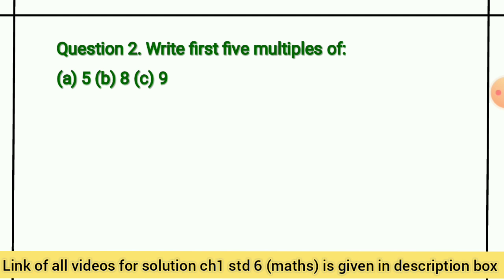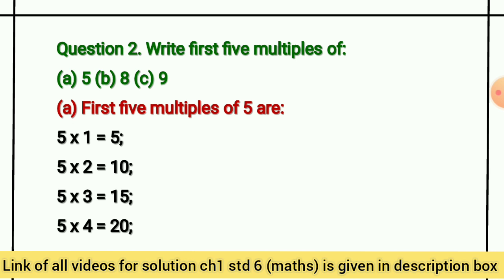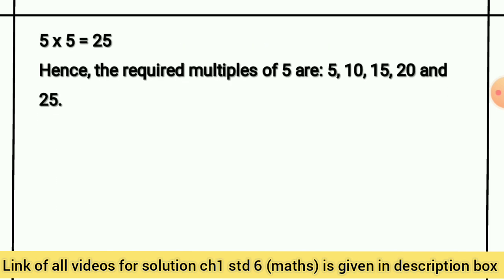Question number 2: Write first 5 multiples. यानि कि हमें यहां दिये गए numbers के 5 multiples लिखने हैं। इसका मतलब यह हुआ कि हमें 5 का table 5 तक लिखना होगा, जो हमारा first 5 multiples हो जाएगा। The required multiples of 5 are 5, 10, 15, 20, and 25.